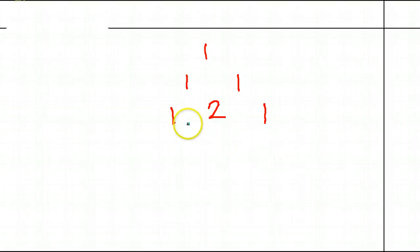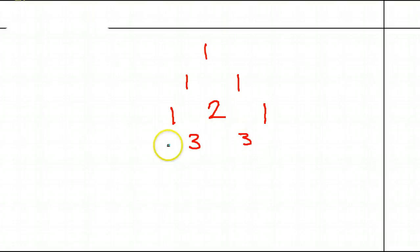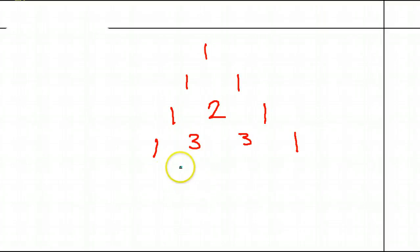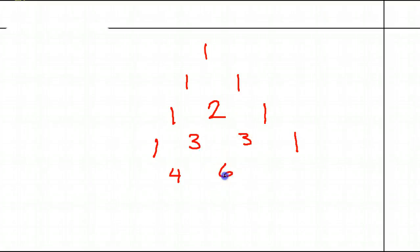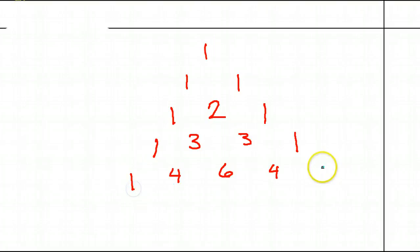just close it off with some 1s. On the left, I have 1 plus 2 — that's 3. On the right, I have 2 plus 1 — that's 3. I've done all the pairs, so I'll close it off with some 1s. I'll just do one more row here: 1 plus 3 is 4, and then 3 plus 3 is 6, and then 3 plus 1 is 4. And then I'll put some 1s on the end.